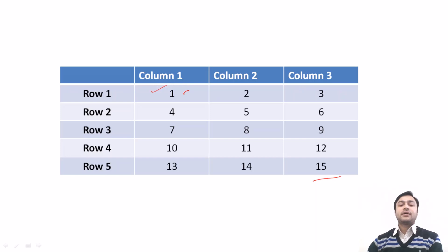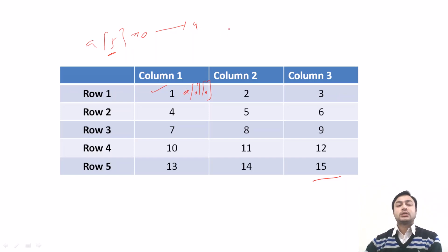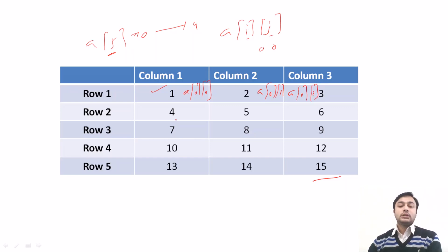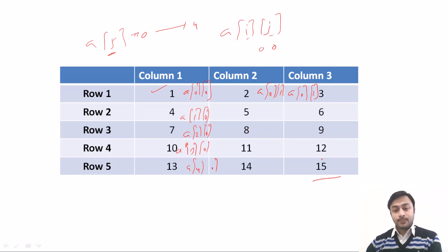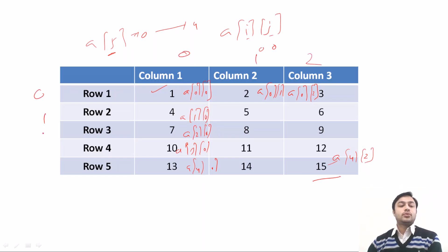The first element is referenced by a[0][0]. Suppose the array size is 5, so it will start from 0 to 4. In this two-dimensional array a[i][j], the indexes go from a[0][0], a[0][1], a[0][2], then a[1][0], a[2][0], a[3][0], a[4][0], and the last element is referenced by a[4][2].